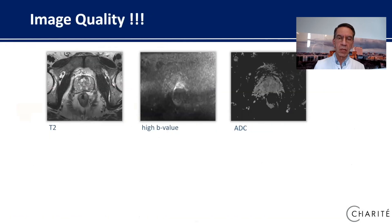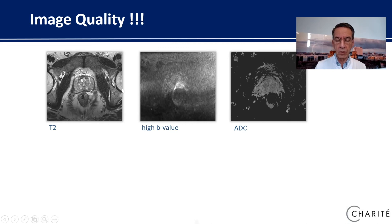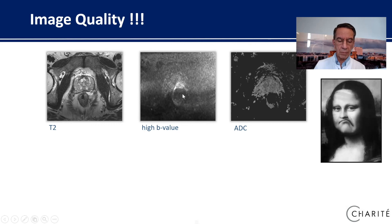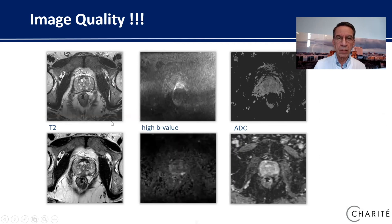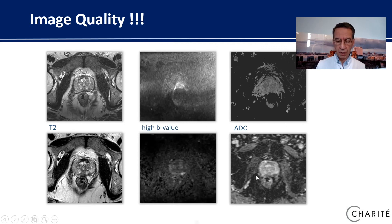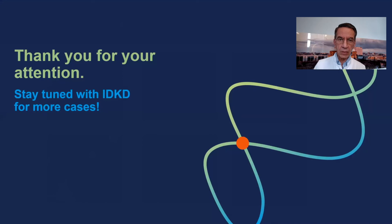However, as radiologists, we should work to improve our image quality. Looking at this case — a 3 Tesla MR in a patient with suspicion of prostate cancer — the diffusion-weighted images are really disappointing and not helpful. The same patient with adequate image quality gives a straightforward diagnosis: focal lesion on T2 and a black and white pattern on diffusion-weighted imaging — this is PIRADS 5, highly suspicious cancer of the prostate. With this, I'd like to thank you for your attention and please stay safe and stay tuned with the IDKD. Thank you.